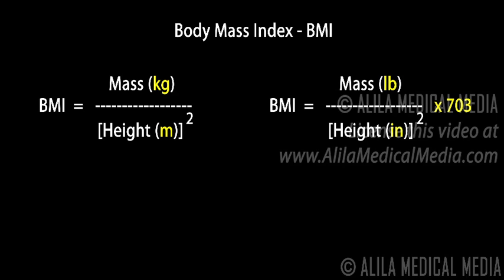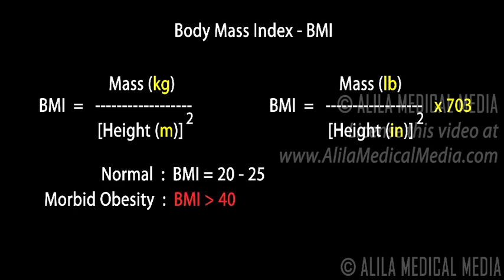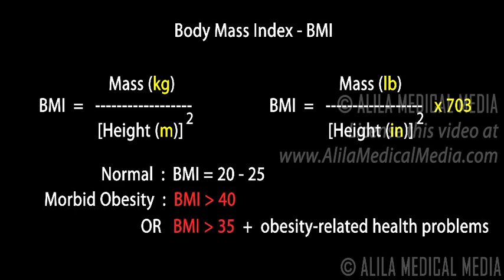The higher the BMI, the higher the extent of obesity. A normal BMI is between 20 and 25. An individual is considered morbidly obese if he or she has a body mass index of 40 or more, or of 35 or more if he or she also has obesity-related health problems such as diabetes, sleep apnea, or hypertension.